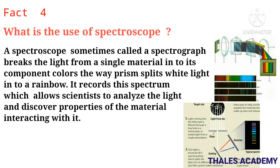Fact 4: What is the use of a spectroscope? A spectroscope — sometimes called a spectrograph or spectrometer — breaks the light from a single material into its component colors, the way a prism splits white light into a rainbow. It records the spectrum, which allows scientists to analyze the light and discover properties of the material interacting with it.